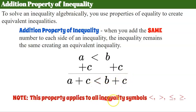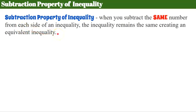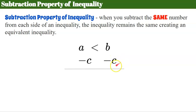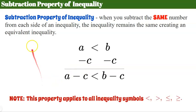This addition property applies to all inequality symbols — the inequality symbol does not matter. Whatever you add to one side, you must add to the other. Just like with solving equations, we also have a subtraction property of inequality, which states that when you subtract the same number from each side of an inequality, the inequality remains the same, creating an equivalent inequality. So if A is less than B and we subtract C from the left, we must subtract C from the right, giving A minus C less than B minus C. This property applies to all inequality symbols.